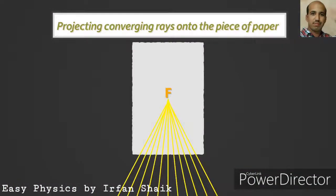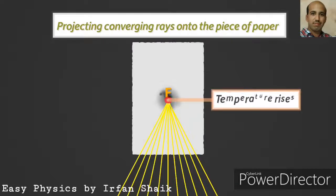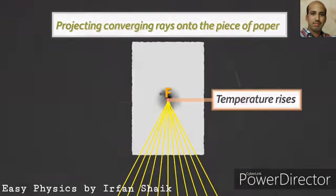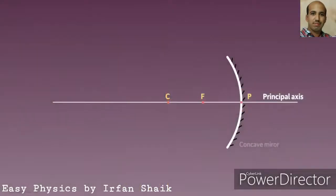If we focus all these converging rays at a point on a piece of paper, it will start getting hotter, and after some time it may catch fire, because the temperature rises too much at that point — that is why the paper will burn.